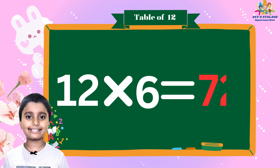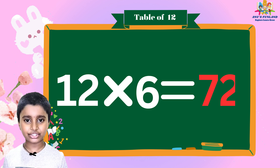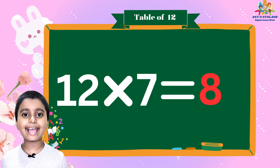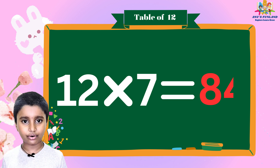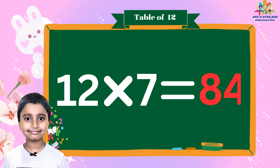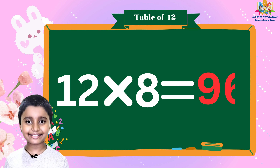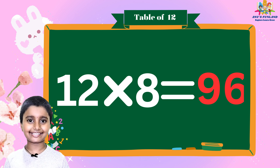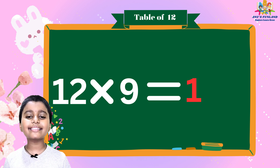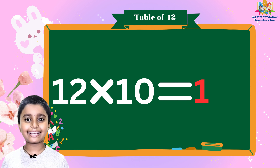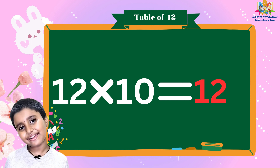Twelve sixes are seventy-two. Twelve sevens are eighty-four. Twelve eights are ninety-six. Twelve nines are one hundred eight. Twelve tens are one hundred twenty.